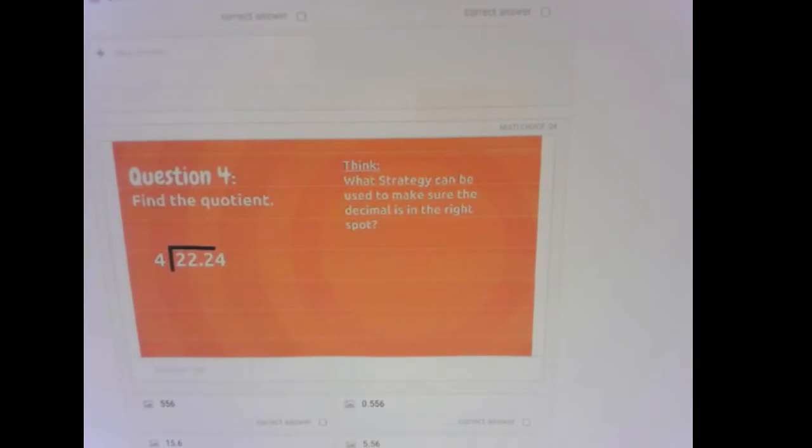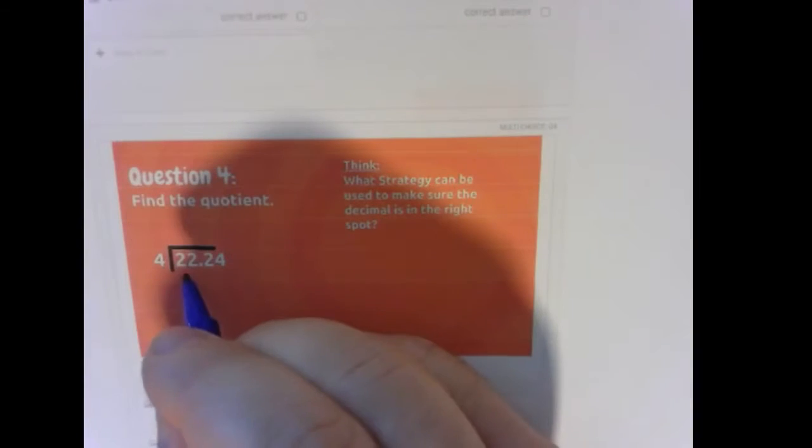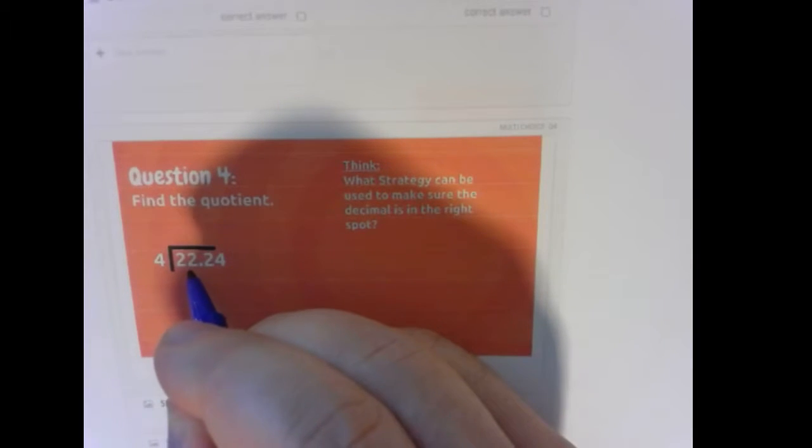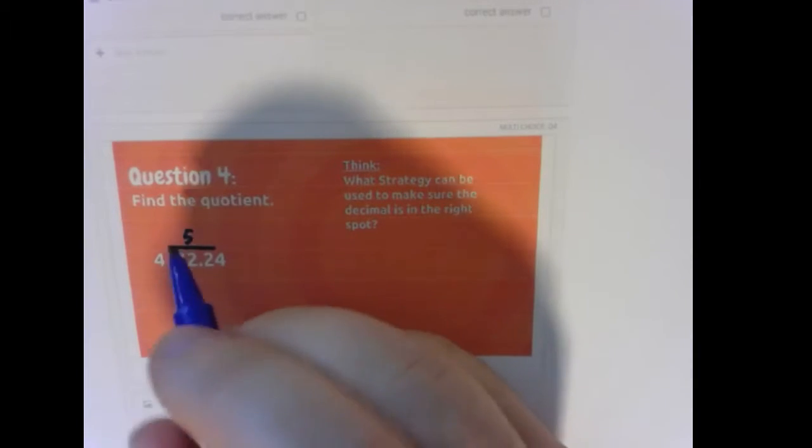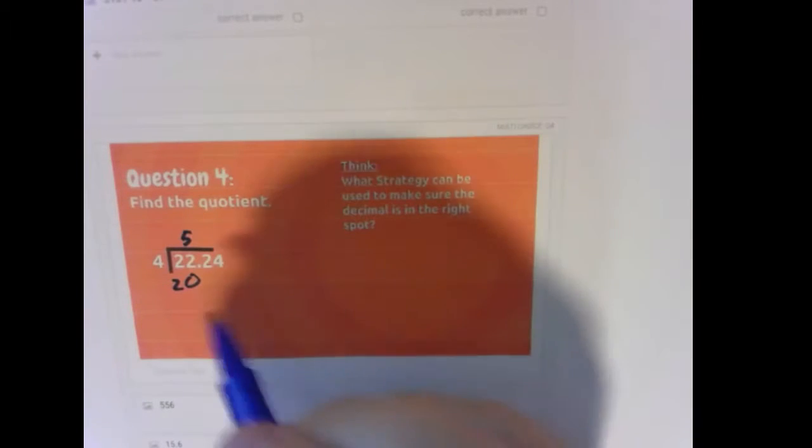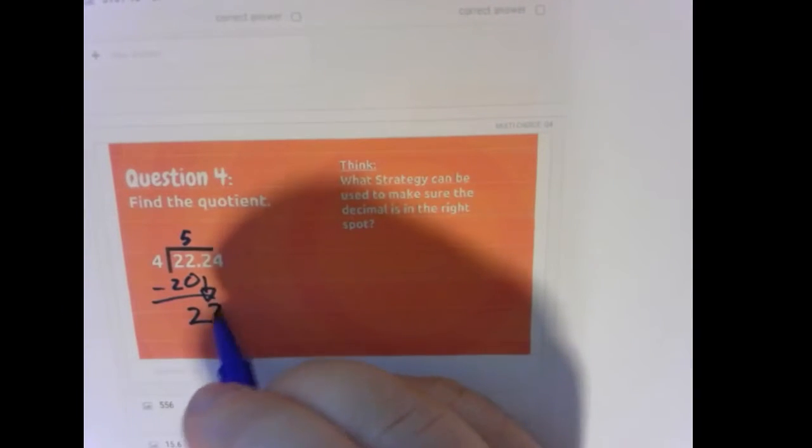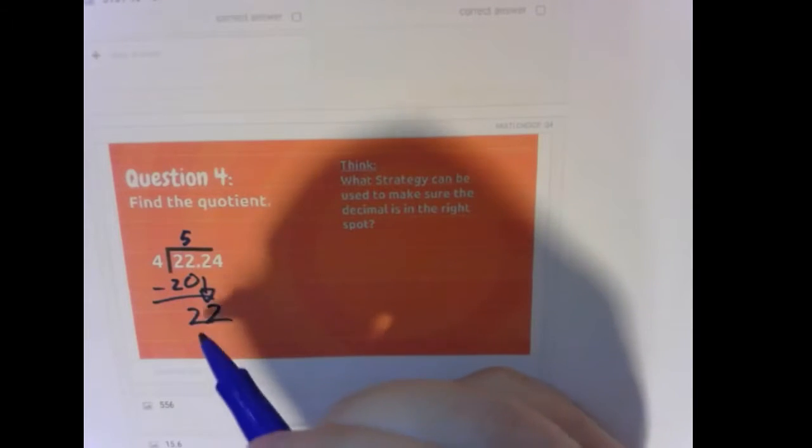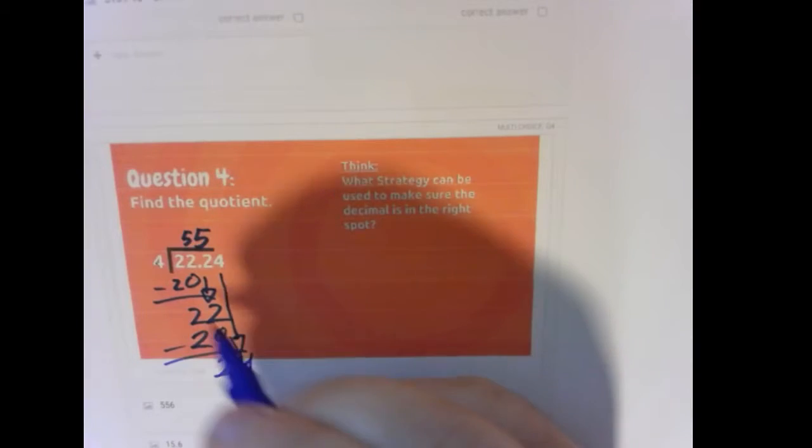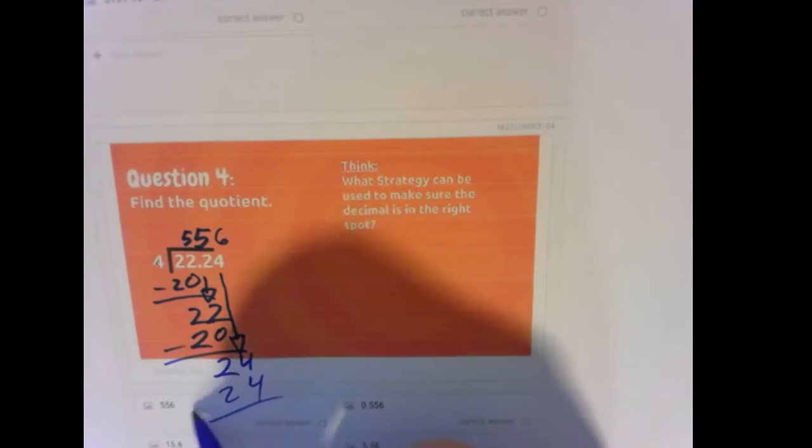All right, find the quotient, and at the end, of course, we have to be careful where the decimal ends up. Does 4 fit into 2? No. Does it fit into 22? Yeah. How many times? Well, 4 times 5 would do it. Now, what is 4 times 5? That's 20. Let's do 22, take away that 20, and we end up with 2. Does 4 fit into 2? Not quite. Let's get a little bit of help here. Does 4 fit into 22? Yeah. Same thing we just had, so it's going to be a 5 again. 5 times 4 makes 20. Find the difference is 2. 4 does not fit into 2. Let's get some help. Does 4 fit into 24? Exactly 6 times it does. 6 times 4 is 24. Find the difference is 0.